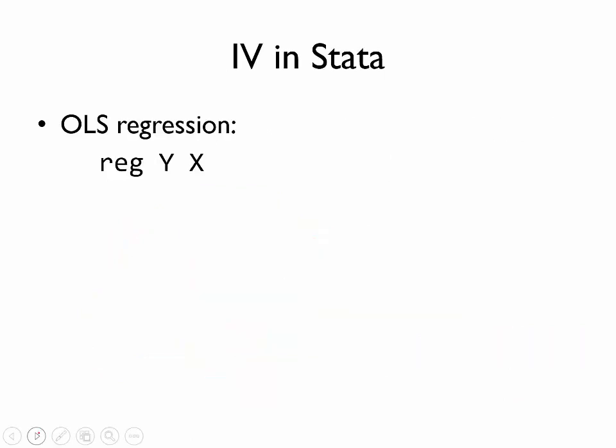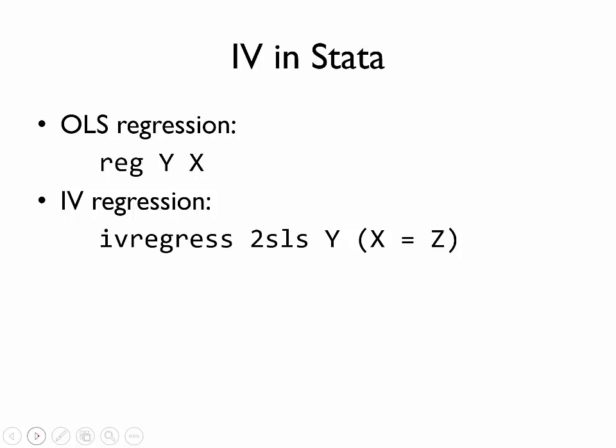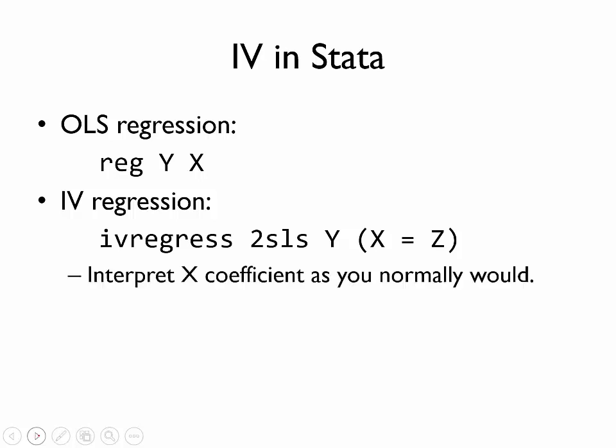Next, let's talk about how to estimate an instrumental variables model in practice using Stata. To estimate an OLS regression, we type reg y x, where y is the dependent variable and x is the independent variable. To estimate a model using instrumental variables, we replace the reg command with ivregress 2sls — that 2sls stands for two-stage least squares, which will be discussed in a future video. We still have the dependent variable y listed first, then we list the endogenous independent variable x followed by an equal sign followed by the instrument z, all in parentheses.